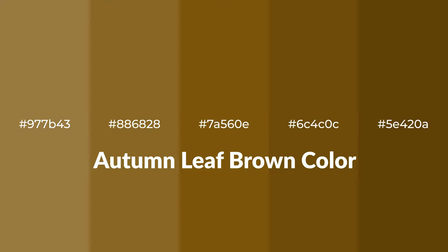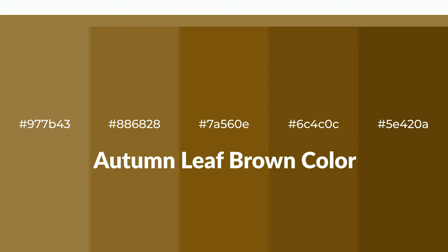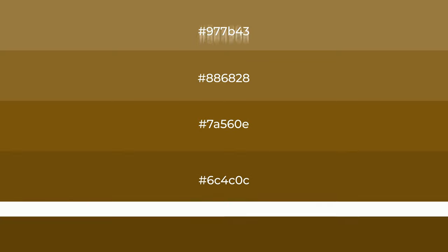Warm shades of autumn leaf brown — a color with a brown hue for your next project. To generate tints of a color, we add white to the color. Tints create light and exquisite emotions.